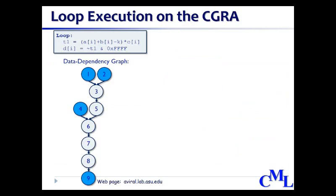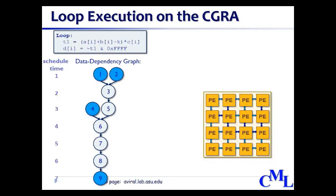Now let's see how CGRAs execute loops in a pipeline fashion. We can see here the code of a loop from a multimedia application, and for any such loop a data dependency graph, or DDG, can be generated after parsing the intermediate representation of the code. This DDG is a directed graph where nodes represent operations to be executed by PEs and edges represent data dependencies among those operations. We can see that in this DDG, operations 1, 2, 4, and 9 are memory operations, shaded in blue. An iterative modulo schedule is generated for the DDG and operations are mapped on PEs in a software pipeline manner.